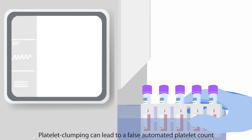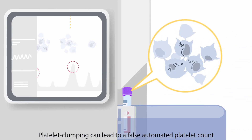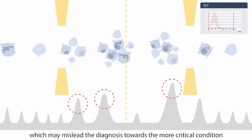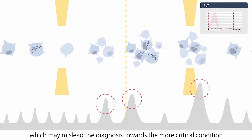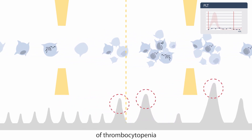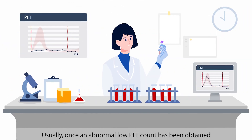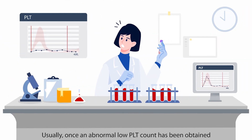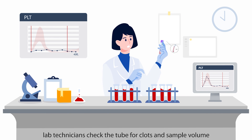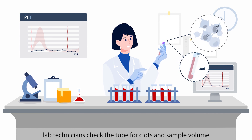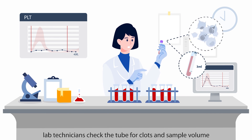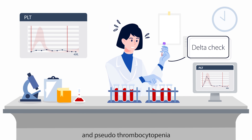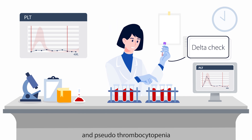Platelet clumping can lead to a false automated platelet count, which may mislead the diagnosis towards the more critical condition of thrombocytopenia. Usually, once an abnormal low PLT count has been obtained, lab technicians check the tube for clots and sample volume and perform a delta check to help differentiate true and pseudothrombocytopenia.